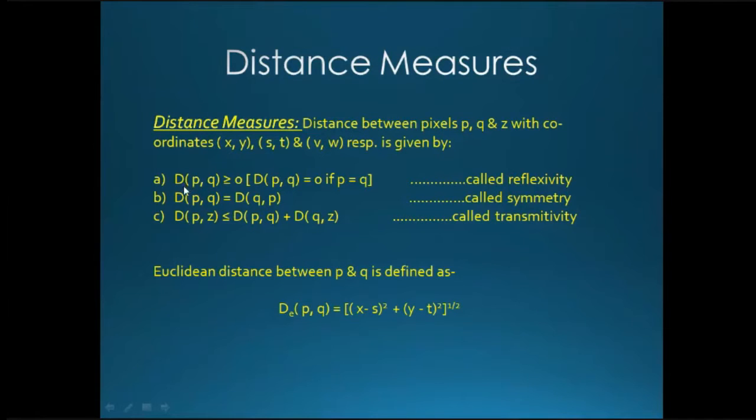D of distance of p, q will be always greater than equal to 0 when d of p, q is equal to 0 if p is equal to q.